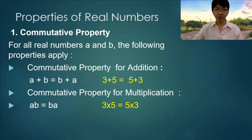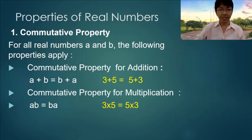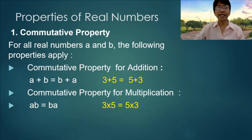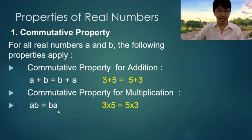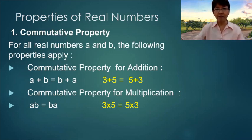First, we have the Commutative Property. For all real numbers a and b, the following properties apply. Commutative property for addition: a plus b is equal to b plus a, or 3 plus 5 is equal to 5 plus 3. Commutative property for multiplication: a times b is equal to b times a, or 3 times 5 is equal to 5 times 3.